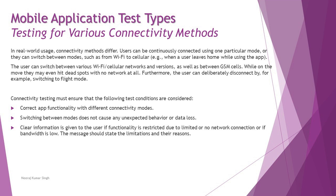Connectivity testing must ensure the following test conditions are covered: correct app functionality with different connectivity modes, whether Wi-Fi or cellular — the app should work fine in any mode. Switching between modes should not cause unexpected behavior or data loss. Clear information should be given to the user if functionality is restricted due to limited or no network connection, or if bandwidth is low. The message should state the limitation and its reason.